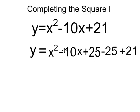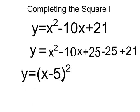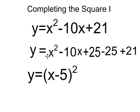Now, the next step is changing this portion into a perfect square trinomial, and then simplifying the last two terms. And so if I look at y equals x squared minus 10x plus 25, I know that the perfect square trinomial had a binomial of x minus 5 squared. And all I have to do is solve this part, minus 25 plus 21 is negative 4.